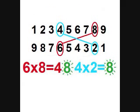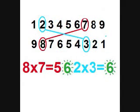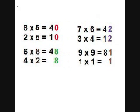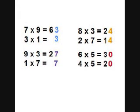In the same way, if you multiply six times eight, and their complements four times two, you get a product in each case ending in an eight. Six times eight equals forty-eight, four times two equals eight. Eight times seven and two times three both have products ending in six. Here are more examples where two numbers are multiplied and their complements are multiplied, and the answers in each case end in the same ones digit.